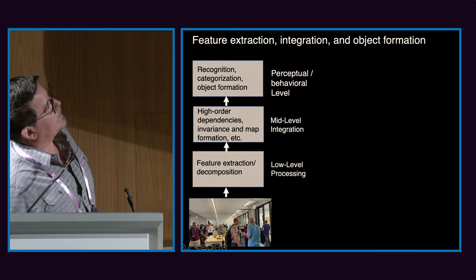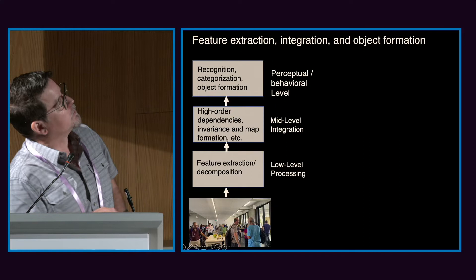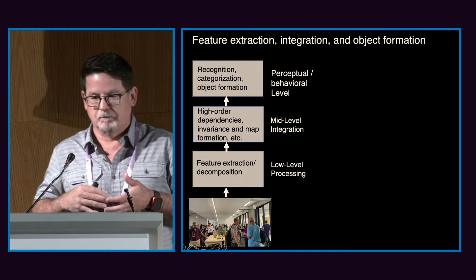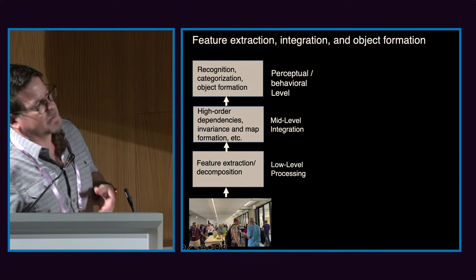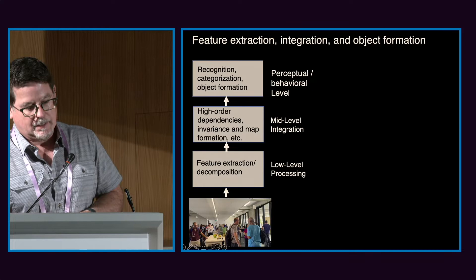The work that we do in our lab focuses on sensory perception in the auditory system. You can think of sensory perception broken up into various stages where initially you have feature extraction. At higher levels in the system, you would extract dependencies, more complicated dependencies. And ultimately, this information would be put back together to form the perception of objects, being able to recognize different visual images or sounds as a whole.